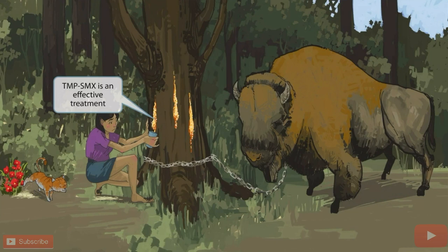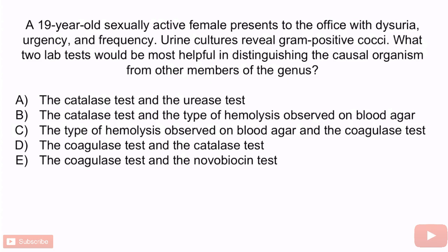Now that we've covered the image, let's review with a question. A 19-year-old sexually active female presents to the office with dysuria, urgency, and frequency. Urine cultures reveal gram-positive cocci. What two lab tests would be most helpful in distinguishing the causal organism from other members of the genus? A, the catalase test and the urease test. B, the catalase test and the type of hemolysis observed on blood agar. C, the type of hemolysis observed on blood agar and the coagulase test. D, the coagulase test and the catalase test. Or E, the coagulase test and the novobiocin test.